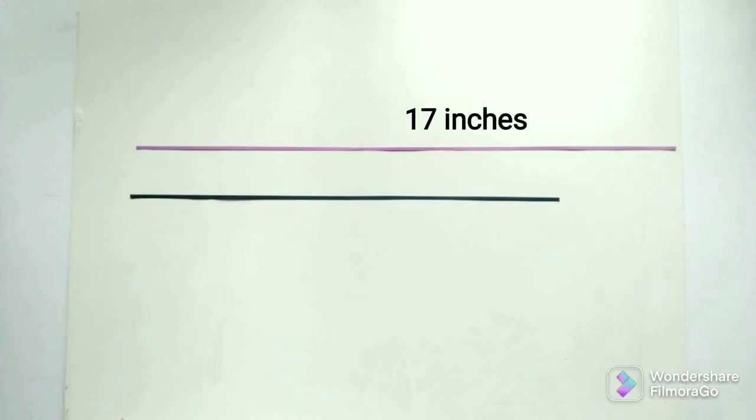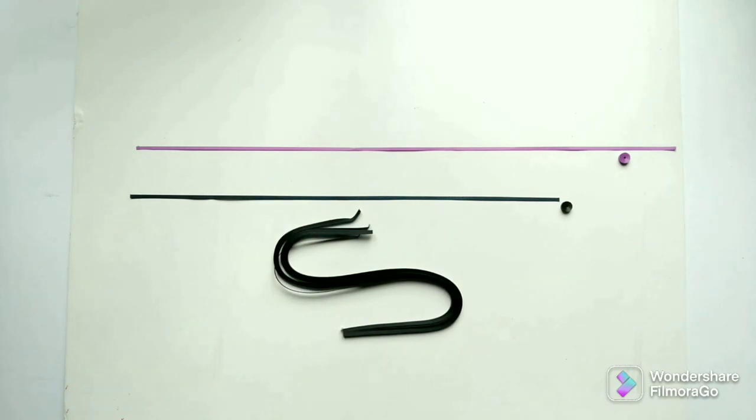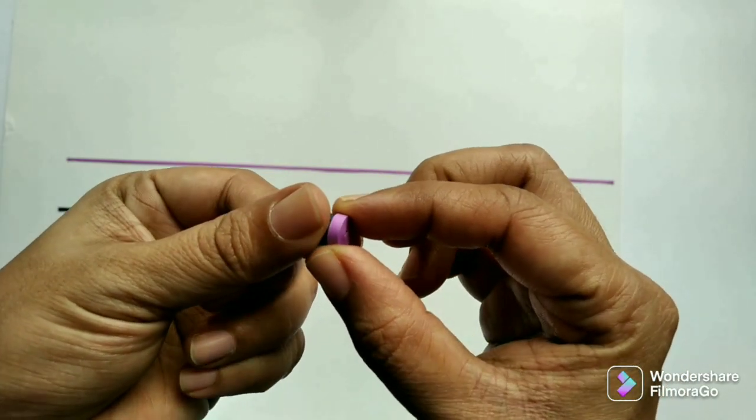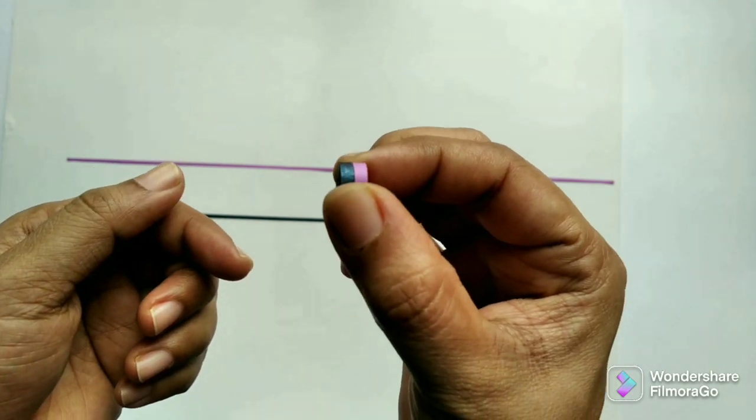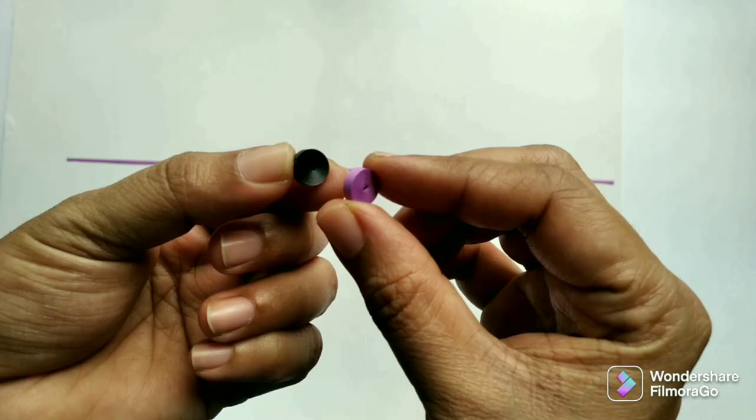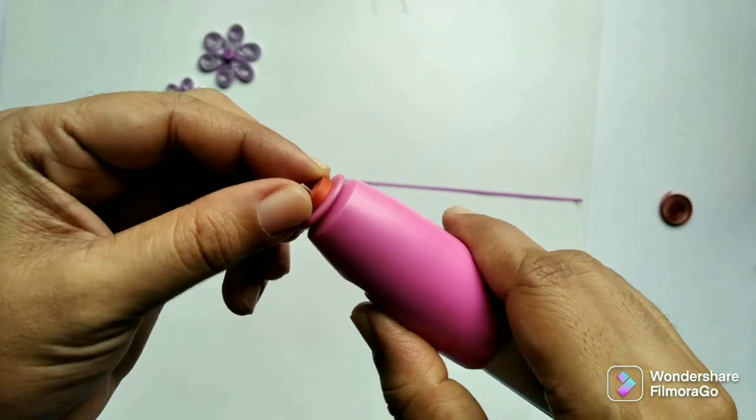Here, these strips are almost 17 inches long, and these strips are 14 inches long. Full strip made of these two will be different sizes, but here both the coils have the same size. This is due to the difference in thickness of the paper strips. I will talk about it in detail in some time.